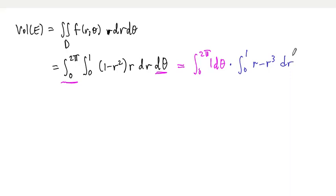Multiply the answers together. So this one's a stare at it problem. That's just two pi. And then this one we get antiderivative is one half r squared minus one fourth r to the fourth. And our boundaries for r are zero to one.